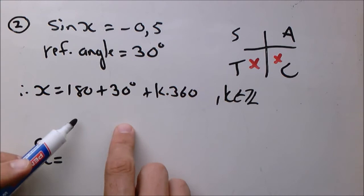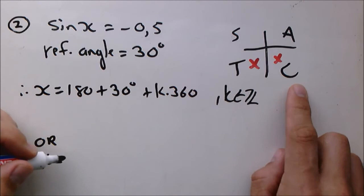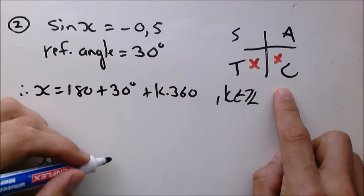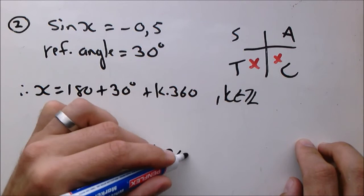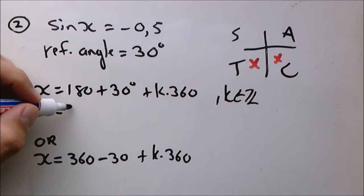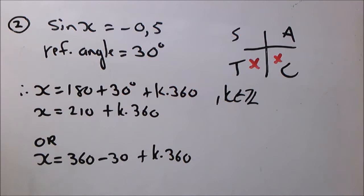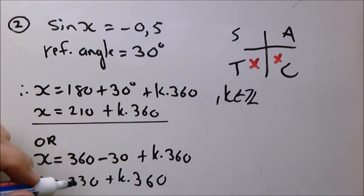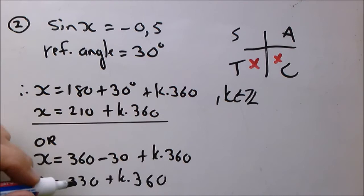I always leave a space open and write down the second expression as well, because normally when you get the first answer you're so excited that you forget to write down the second answer. So in the fourth quadrant: 360 minus 30 plus k times 360. Now we simplify: 180 plus 30 is 210 plus k times 360 - that's the first answer. And 330 plus k times 360. Those are the final general answers for this question. Now you know how to solve for the sine ratio for both a positive and a negative number.